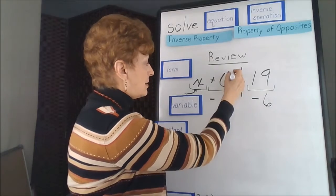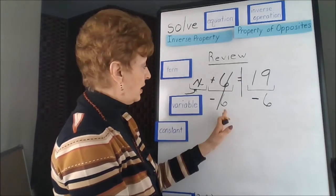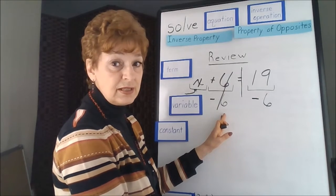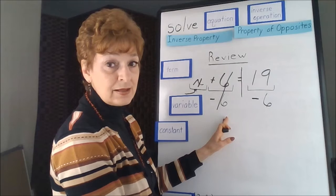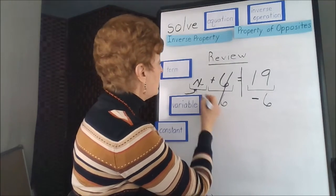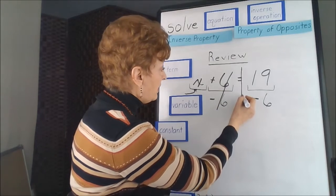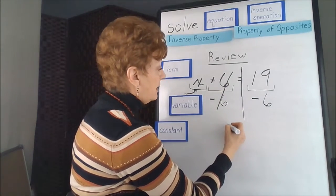Plus 6 minus 6 basically eliminates it from this side of the equation because it turns to 0, and that eliminates. 0 answer eliminates in either addition or subtraction. So the only thing left over here on this side of this wall is an x.